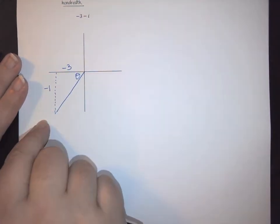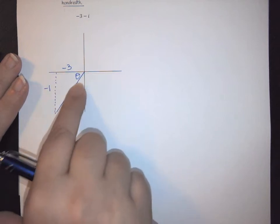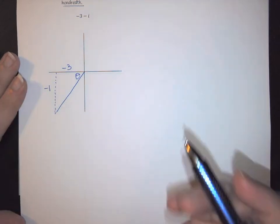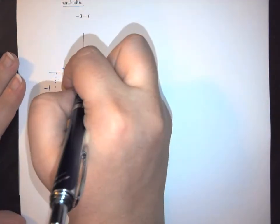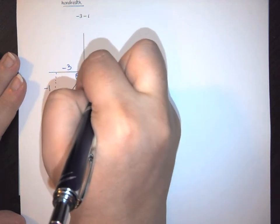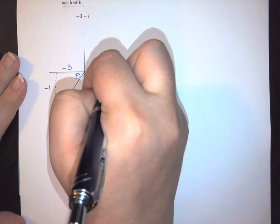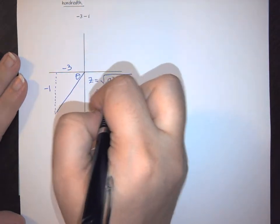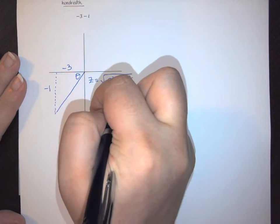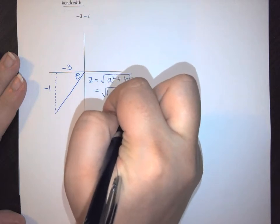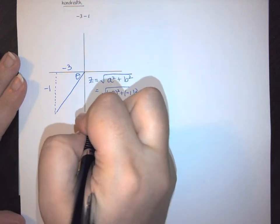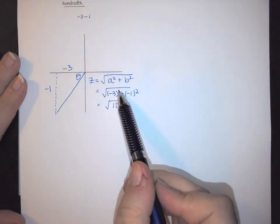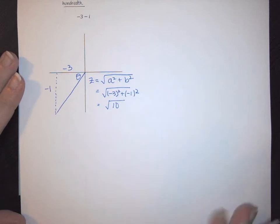Which automatically says that this z value is not going to be nice and pretty. We can prove it by finding the magnitude: z is going to be the square root of a squared plus b squared. So this is going to be the square root of negative 3 squared plus negative 1 squared, which is going to be the square root of 10, because negative 3 squared is 9 plus 1 is 10. Notice this does not reduce nicely.